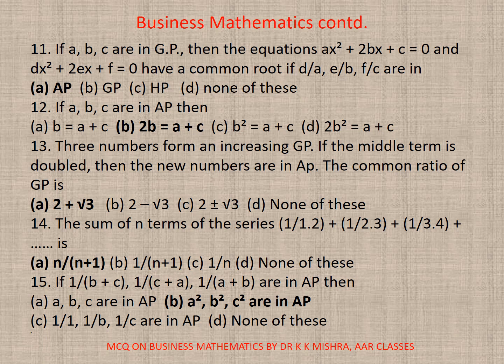Question 11. If A, B, C are in GP, then the equations AX² + 2BX + C = 0 and DX² + 2EX + F = 0 have a common root if D/A, E/B, F/C are in - here, correct option is A, AP. Question 12. If A, B, C are in AP then - though that is a repeated one, here correct option is B, 2B is equal to A plus C.